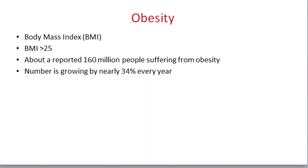You might have heard the term overweight, which is related to obesity. Both terms, overweight and obesity, are used to describe the situation in which body weight is higher than what is recommended for good optimal health. To be more specific, we calculate the Body Mass Index, that is the BMI, which is used to classify people into four subclasses: underweight, normal, overweight, and obesity.